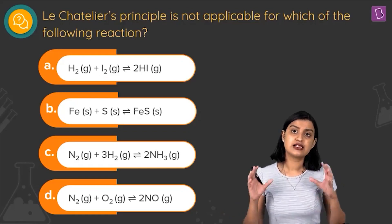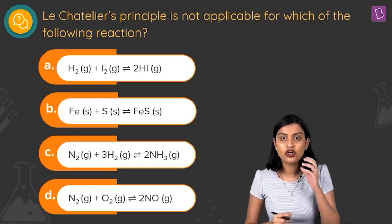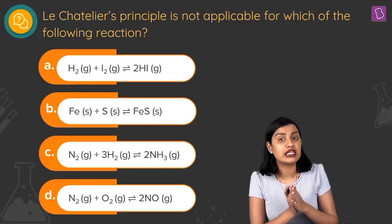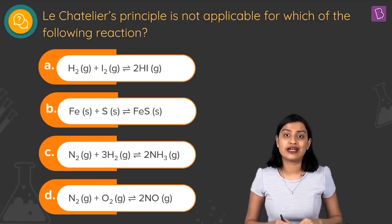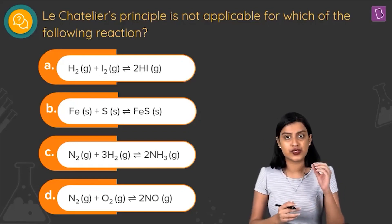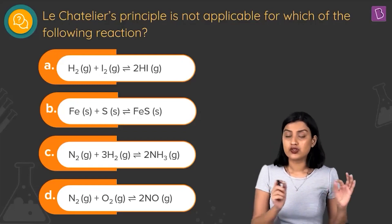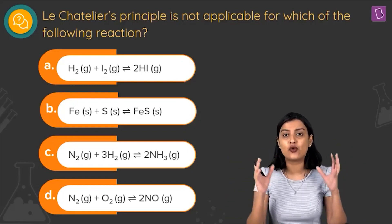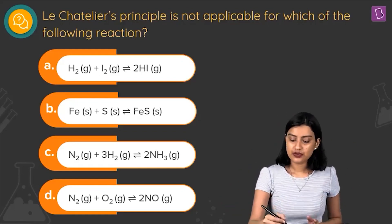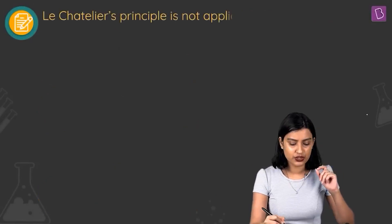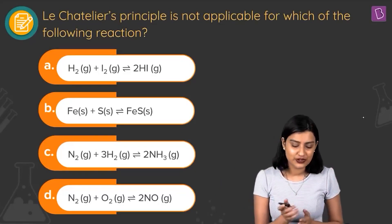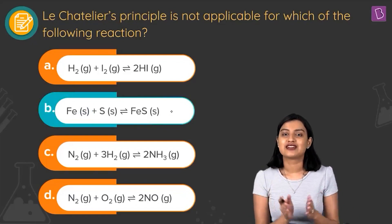When everything is solid, ideas of pressure and volume changes become inapplicable — they cannot be applied to solids the way they can to liquids and gases. For a completely solid equilibrium, Le Chatelier's principle cannot be applied. Therefore, option B (Fe + S → FeS) is the correct answer.